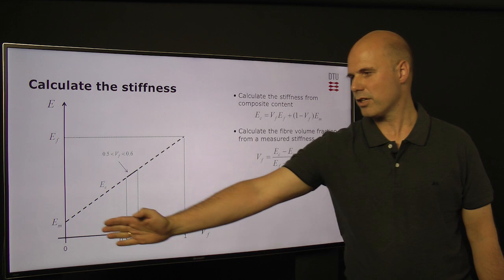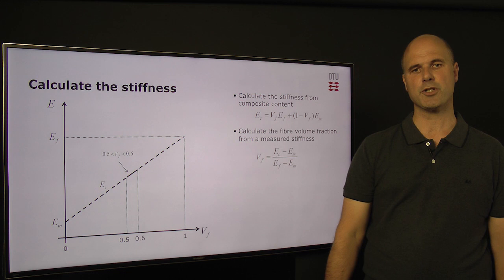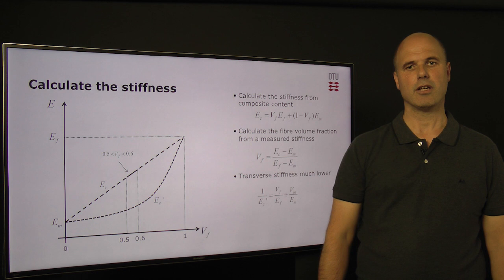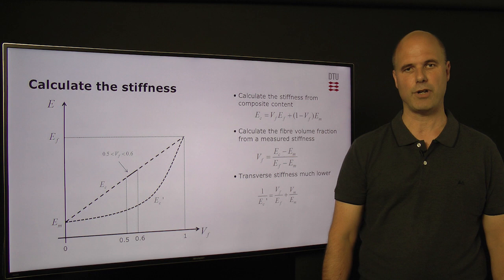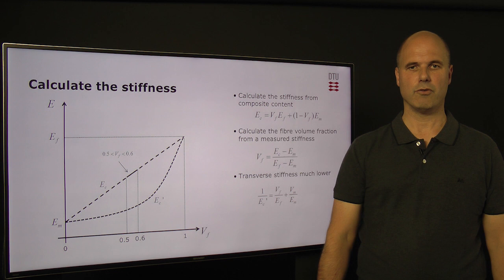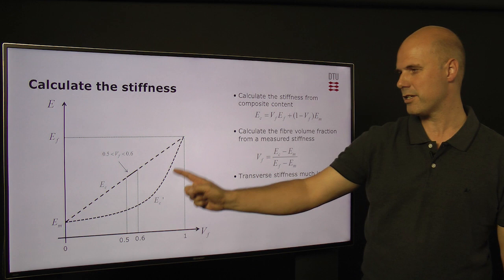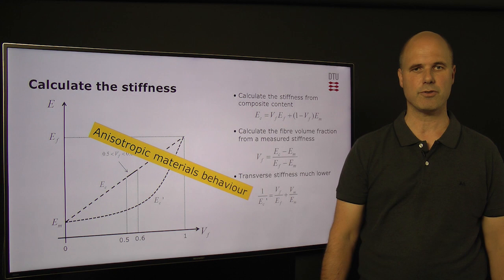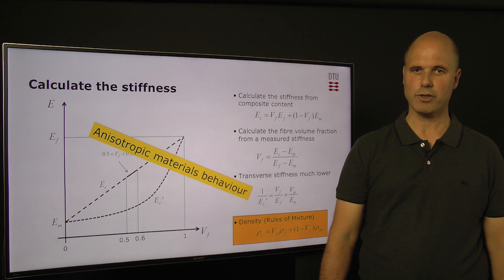Conventional composites do not cover the whole range of volume fraction — normally we consider composites with between 50 to 60 percent fibers. If we look at stiffness in the transverse direction, we can no longer assume equal straining of the two phases. Instead, we get the inverse rule of mixture, resulting in a much lower stiffness. This gives us an anisotropic material behavior, with a very large difference in stiffness in the fiber direction versus the transverse direction.